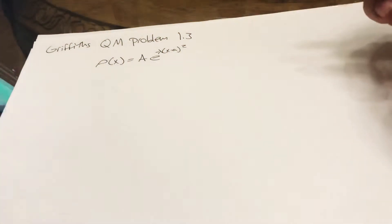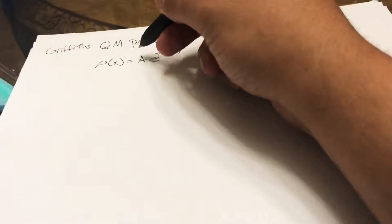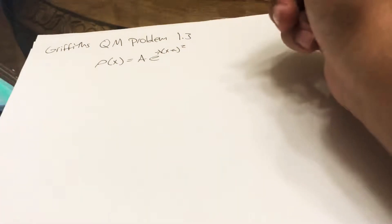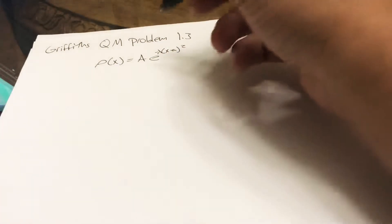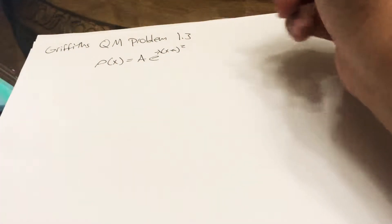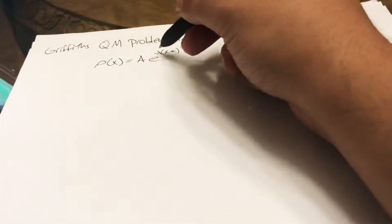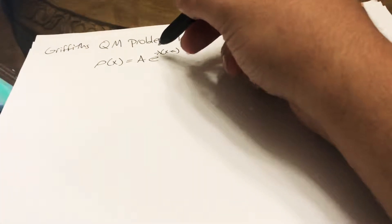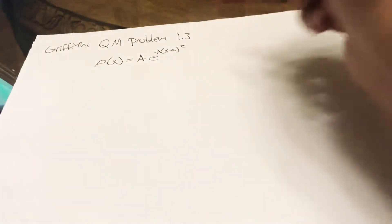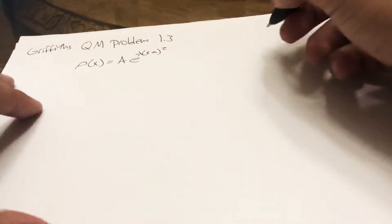So we have ρ(x), and our ρ is just our probability distribution. This A is a constant — what's called our normalization constant. And this e to the negative λ(x minus a) squared is the actual distribution.